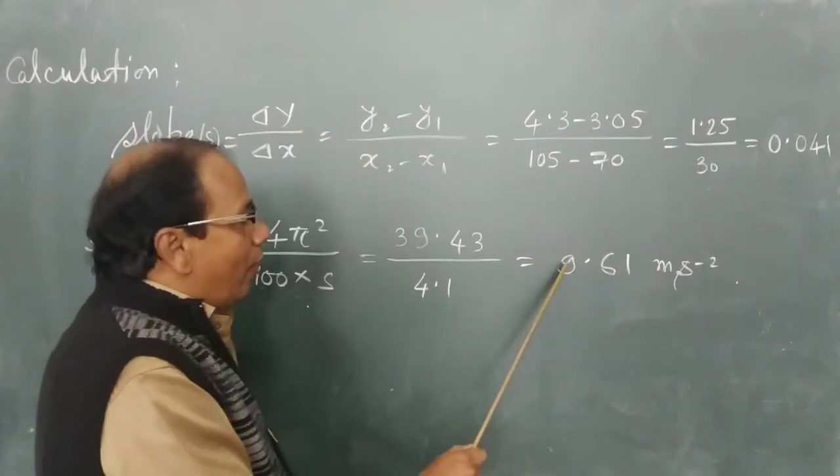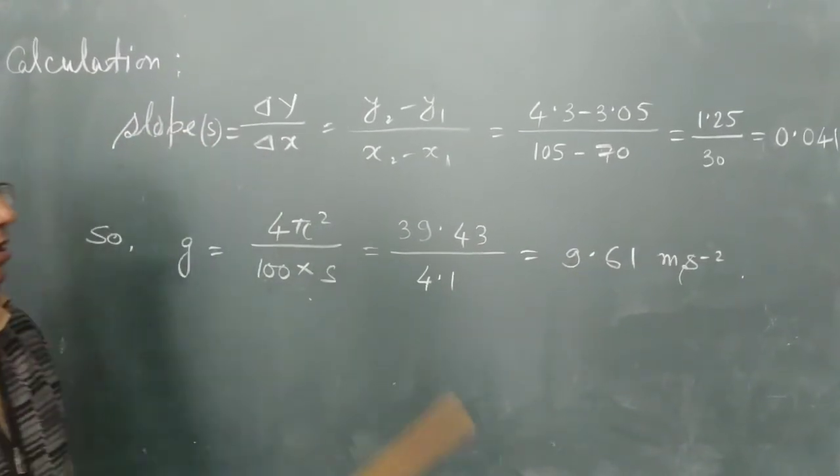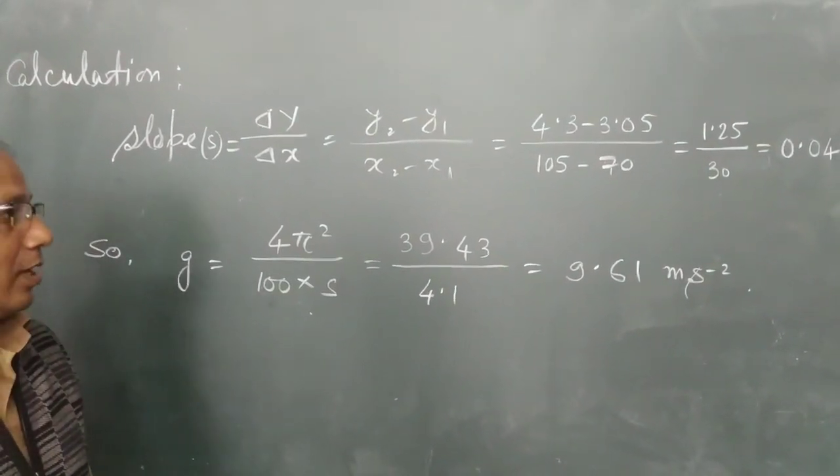Then why is it a little bit less? Because we are above the ground, above the sea level, means on the top of Himalaya.